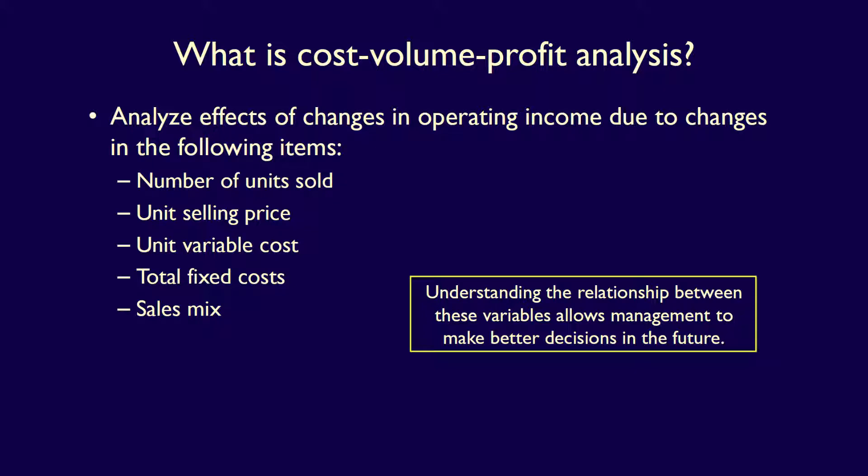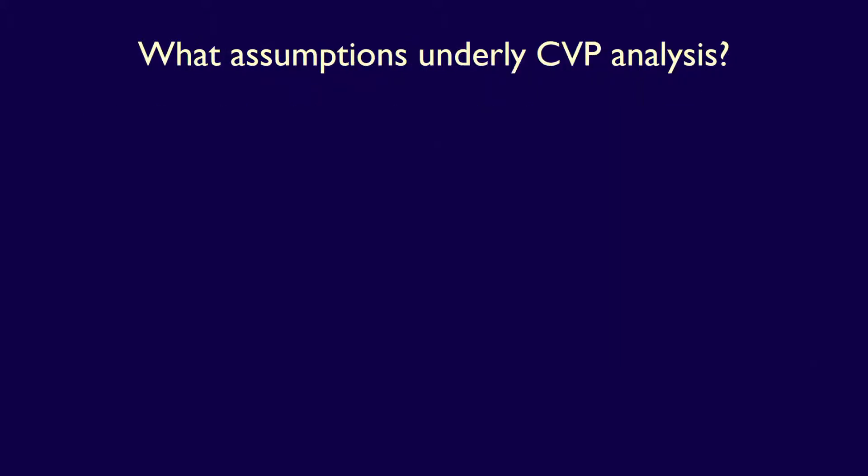They can use this information to better understand what might happen in the future. There are a number of critical assumptions that must be understood. First, the behavior of both costs and revenues is linear within the relevant range. This means that the per unit costs and revenues do not fluctuate and the relationship between costs and revenues stays constant.